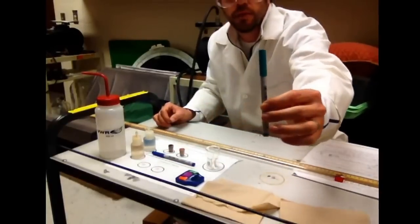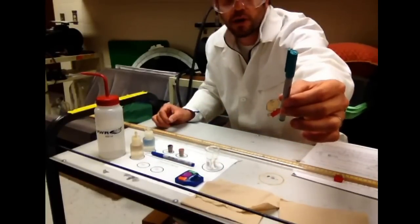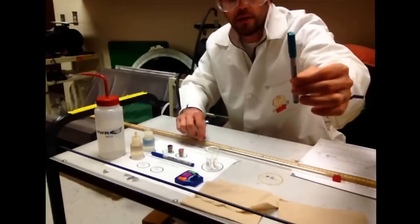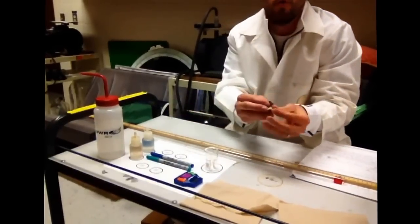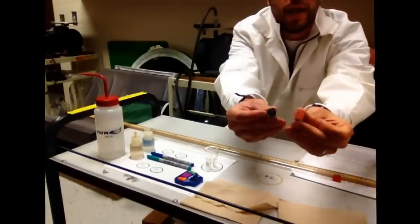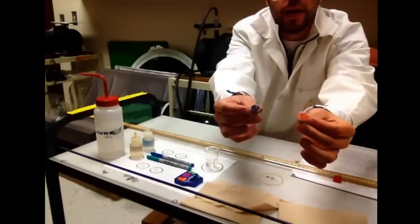We have some washable markers so you can write on the glass tube. We have a couple of corks, one is red and one is black so that you know which gas is which.